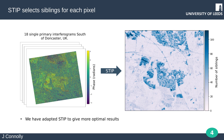Applying STIP to a series of interferograms assigns a number of siblings to each pixel. Pixels that contain more stable scatterers, like buildings and roads, have a greater number of siblings, which can be seen in the right figure. We have adapted STIP to give more optimal results by changing the window geometry so as not to bias towards features in certain orientations, like roads and roadways for example.